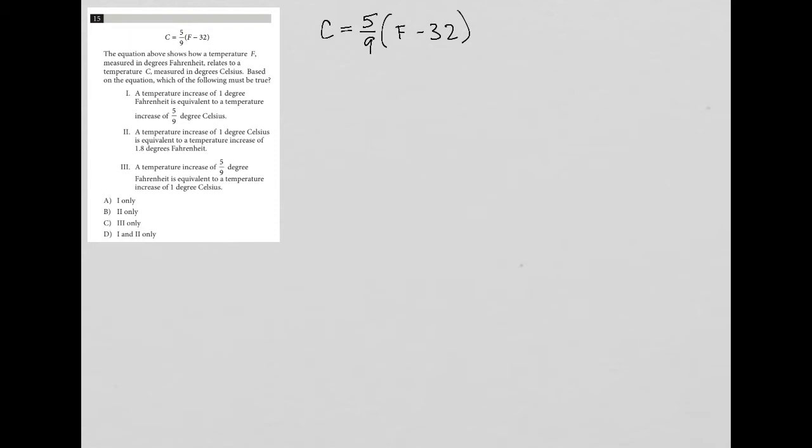So this jumps straight into a process of elimination type of question. We're not really given anything additional outside of the formula itself, so I have to basically test every answer choice to see what works and what doesn't. Choice one says a temperature increase of one degree Fahrenheit is equivalent to a temperature increase of 5/9 degrees Celsius.